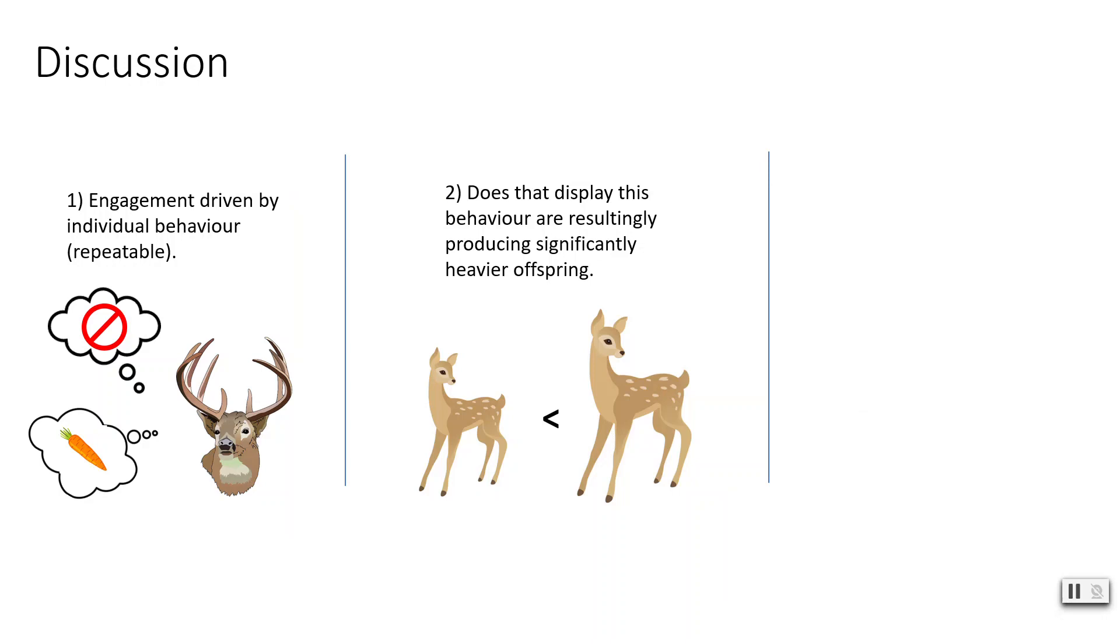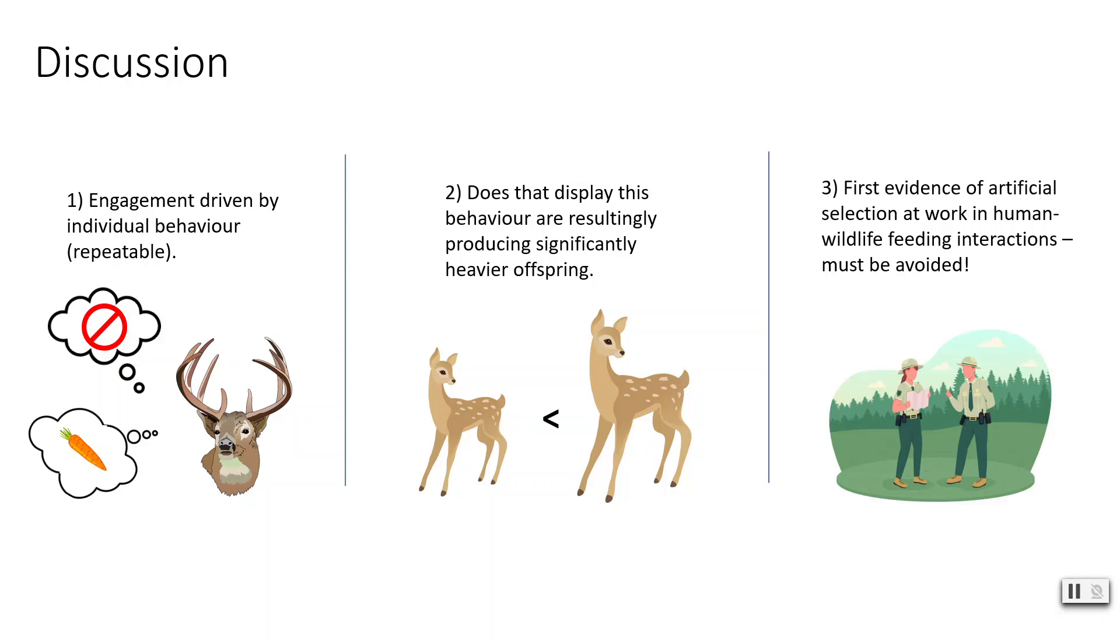In general, those offspring that are heavier tend to have a survival advantage in wild populations. Therefore, it appears that these human wildlife interactions are resulting in artificial selection with better reproductive success for those females that display this behavioural trait.